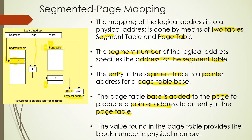To summarize: the logical address is divided into three parts — segment, page, and word. There are two tables — the segment table and the page table. The segment number is used as the address to the segment table. The segment table entry is a pointer address to the base of the page table. Adding the page number to that base gives an entry in the page table. From the page table content we get the block number, and the block number together with the word number from the logical address gives our physical address.